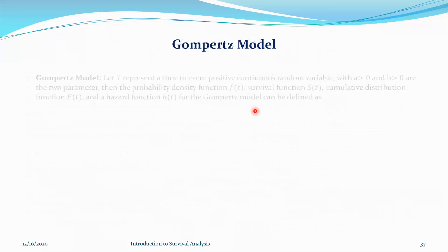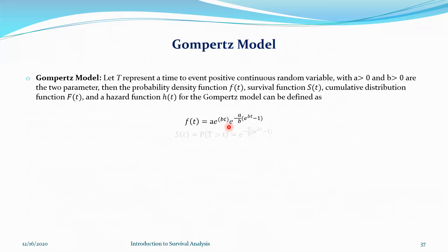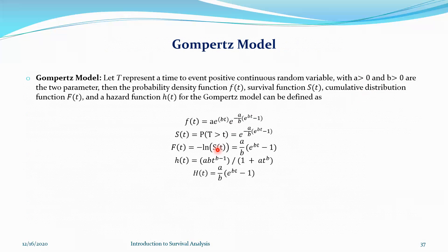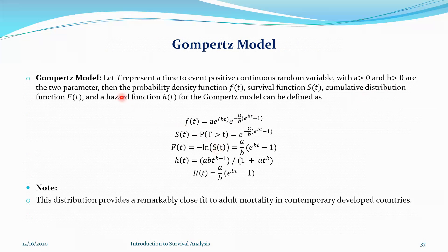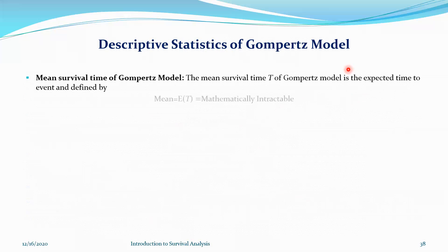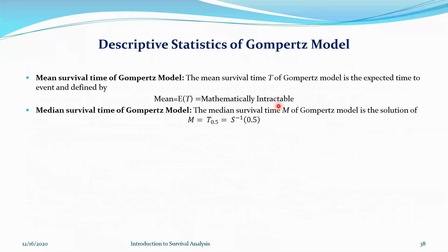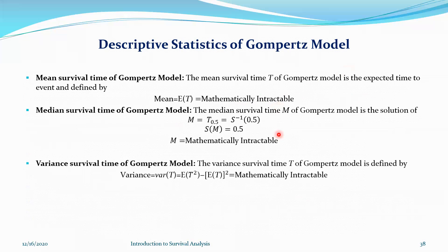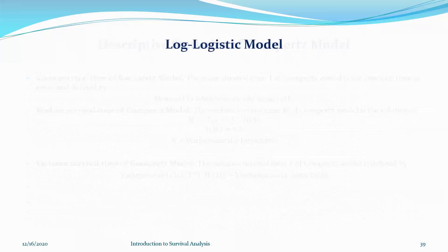Next we have the Gompertz model, also called the Gompertz curve. The PDF of the Gompertz curve has two parameters A and B, both greater than zero. We have the survival function, distribution function, hazard rate, and cumulative hazard rate. Note that this model is very helpful for fitting adult mortality in advanced countries. This is also called the log-variable model. Descriptive statistics: the mean, median, and variance cannot be obtained in closed form, but can be estimated with different numerical methods.